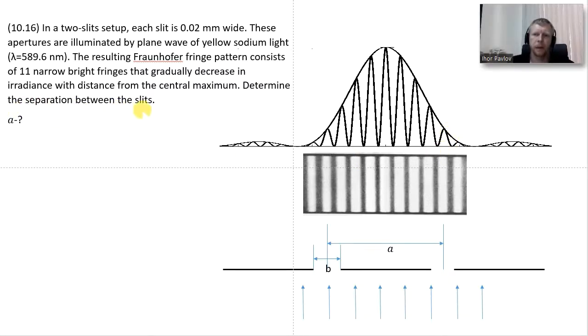We need to determine the separation between the slits, which is a on this picture. The most important information is that 11 narrow bright fringes are inside of the first diffraction maximum.